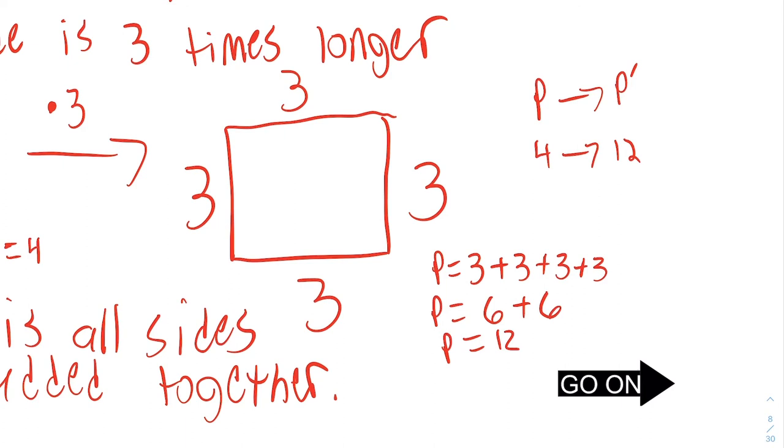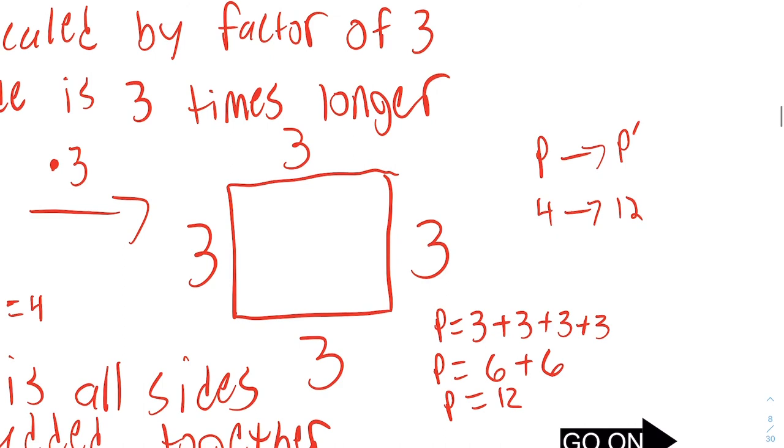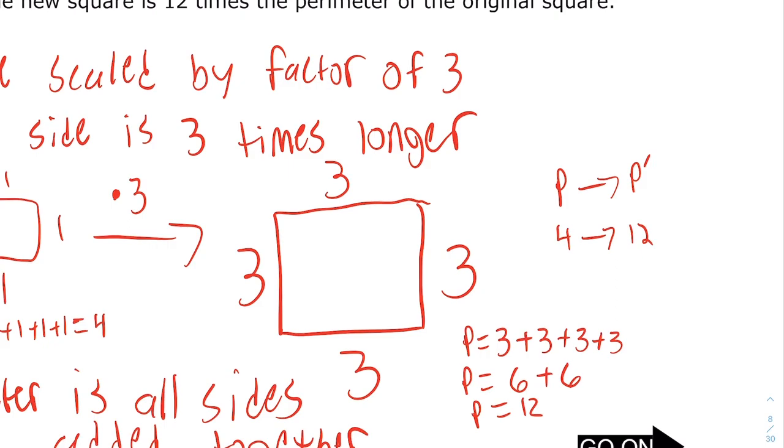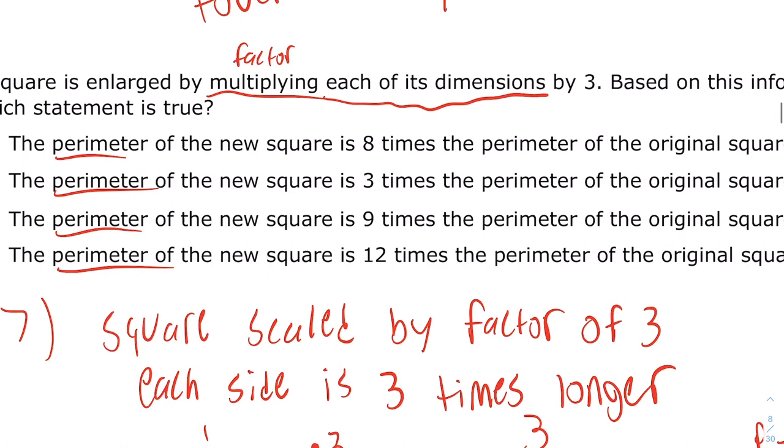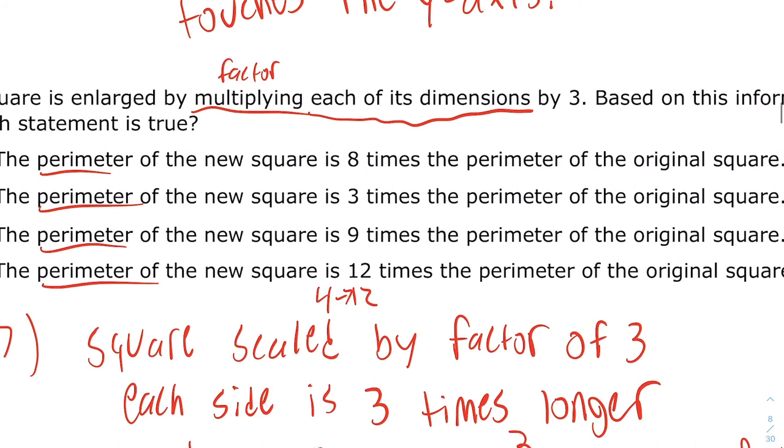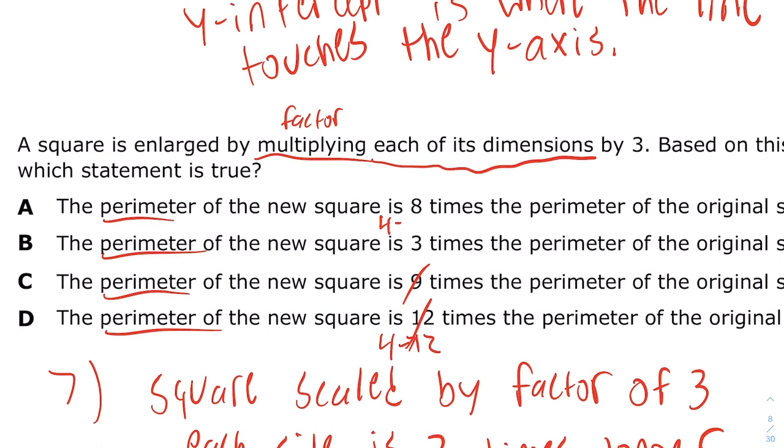How many times bigger is that? From four to get to twelve, what do you multiply by? Let's look at these answer choices. From four to twelve, is that twelve times bigger? No. Is it nine times bigger? No. The new square is three times the perimeter of the original square.